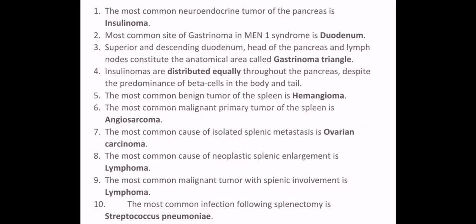The most common neuroendocrine tumor of the pancreas is insulinoma. The most common site of gastrinoma in MEN1 syndrome is the duodenum. The superior and descending duodenum, head of the pancreas, and lymph nodes constitute the anatomical area called the gastrinoma triangle. Insulinomas are distributed equally throughout the pancreas, despite the predominance of beta cells in the body and tail.